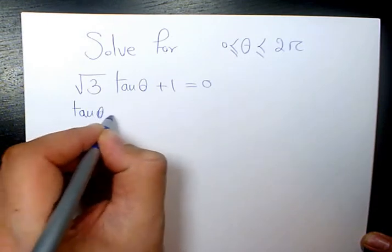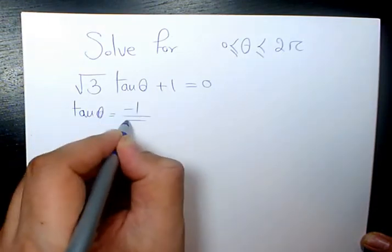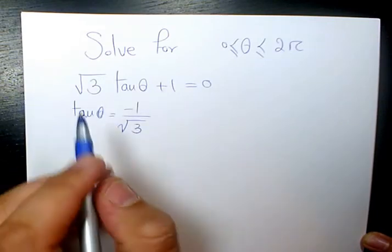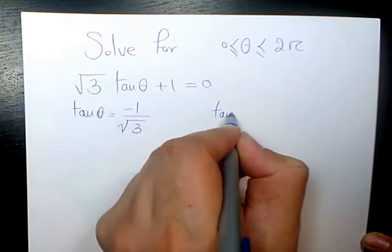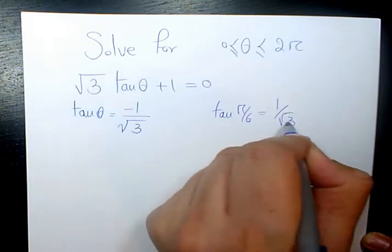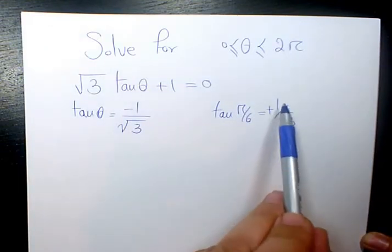So it's going to be tan θ = -1/√3. Then I need to find out the value of θ. We know tan(π/6) = 1/√3, basically positive 1/√3.